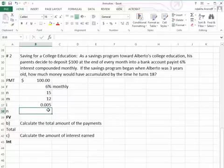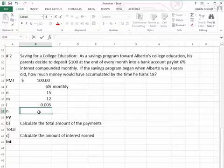The N is going to be equal to our M, which is 12, times the 15, which tells us the parents made 180 payments into this account.